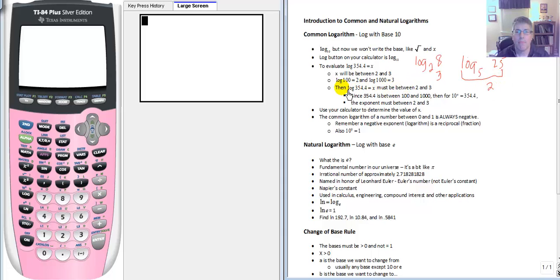So log base 10 or log of 354.4, well that must be some value between 2 and 3. Because log of 100 would be 2, right? Log base 10 of 100 would be 2. 10 squared is 100 and 10 cubed is 1000. So 10 to what power is 354.4? Well that must be something between 2 and 3.